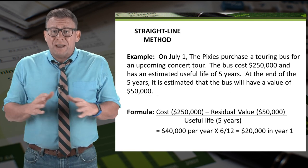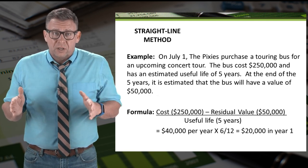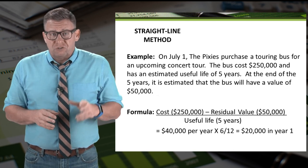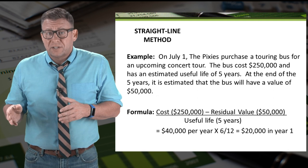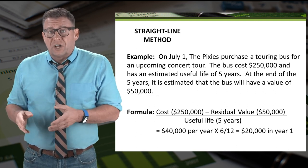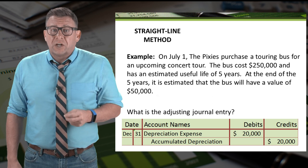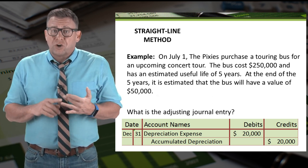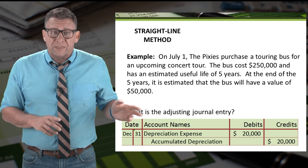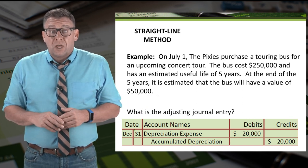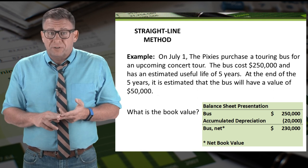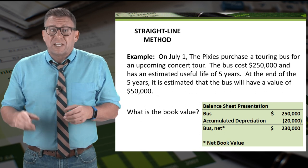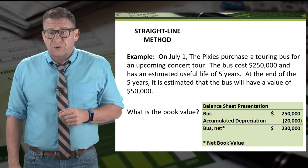Except the Pixies didn't have the bus for a full year — they had it for half a year. So let's multiply the annual depreciation of $40,000 by six-twelfths to get $20,000 for year one. We can record the adjusting journal entry by debiting depreciation expense and crediting accumulated depreciation for $20,000. Finally, the book value is the cost of $250,000 minus accumulated depreciation of $20,000, giving us a net book value of $230,000.